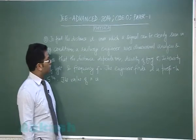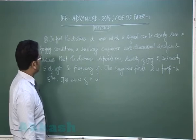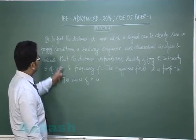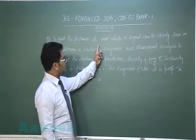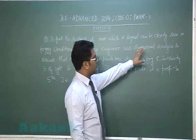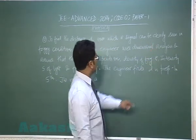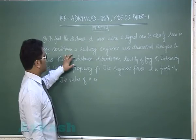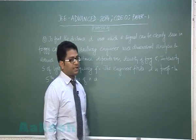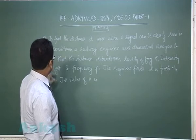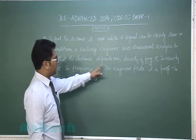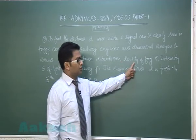Proceeding to question number 12, which is from dimensional analysis. It asks to find the distance D over which a signal can be clearly seen in foggy conditions. A railway engineer uses dimensional analysis and assumes that the distance depends on density of fog.